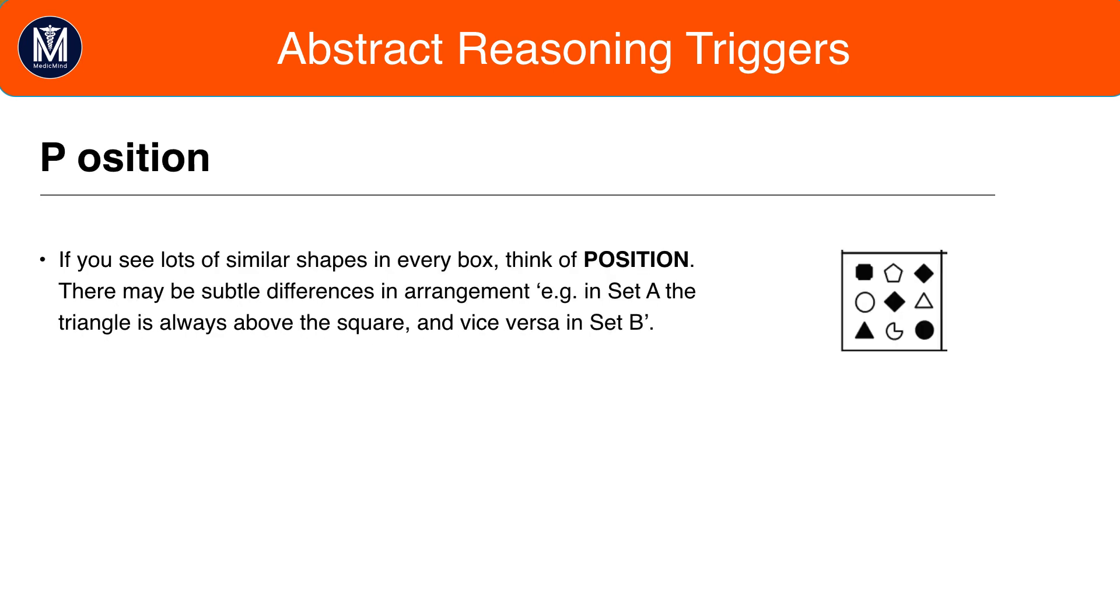For position patterns, this is more general rather than the very specific curved versus straight for shape patterns. If you see lots of similar shapes in every box, think of position. There may be subtle differences in the arrangement, so for example in set A the triangle could always be above the square whereas in set B the square could always be above the triangle.